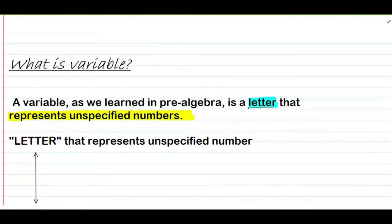Yung mga letter na yun, yun yung A, B, C, hanggang Z, that represent unspecified numbers. Unspecified numbers — yun yung mga unknown numbers. Bali, para nangyayari, yung letter na yun, nakatago sa loob na yun yung mismong number. Meron siyang number, pero hindi mo alam kung anong number siya.